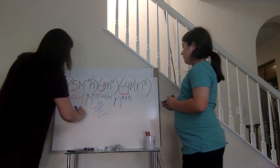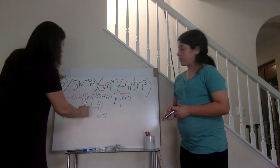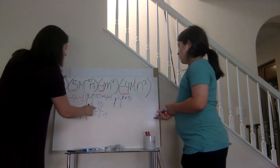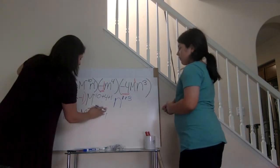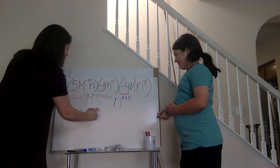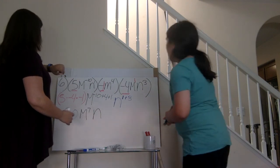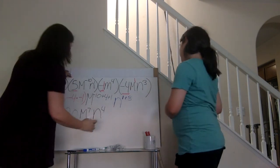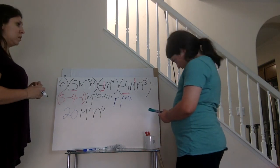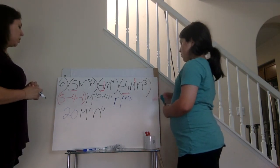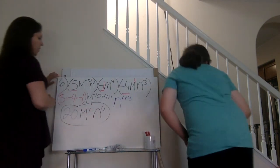If you haven't copied that down, write it down fast or pause it. We got seven for the m exponent. What's my n going to be? The n is going to be four — one plus three equals four. Looking at my numbers, is everything simplified? Do I have any negatives to deal with? Nope, not even there. So this is going to be my final answer.